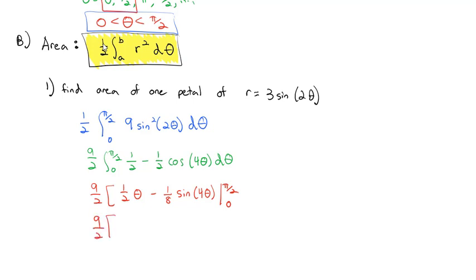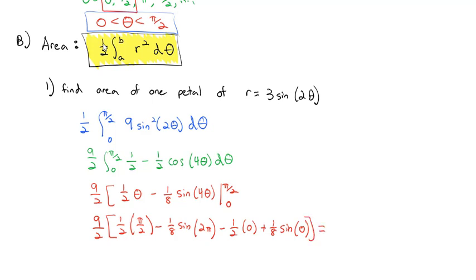Evaluating at the upper limit: 9/2 times [1/2 · (π/2) − (1/8)sine(4 · π/2)]. Since 4 · π/2 = 2π, sine(2π) = 0. At the lower limit θ = 0, everything is also 0. So we get 9/2 times π/4, and all the remaining terms go to zero. The final area of one petal is 9π/8.